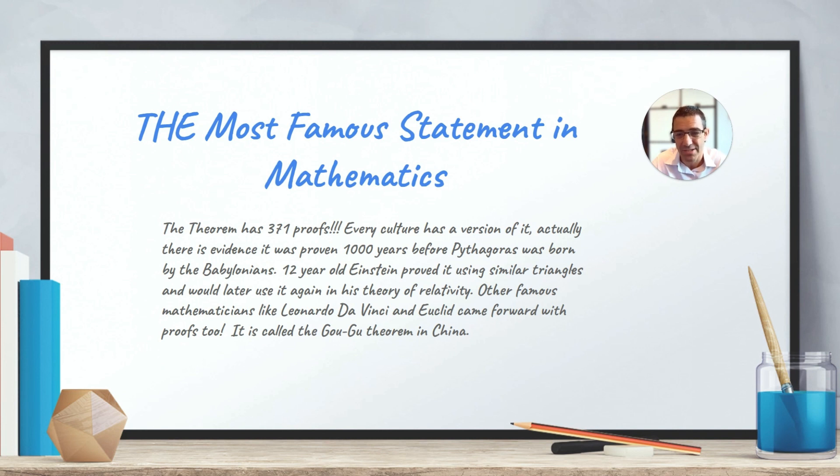And in fact, there's so many proofs to the Pythagorean theorem. It is the most proven theorem in mathematics. It's the most famous statement in mathematics with 371 proofs. Every culture has a version of it. Actually, we believe that probably a thousand years before Mr. Pythagoras was born, it was proven by the Babylonians, or at least they used it. So it might have not been formally proved, but they had a use for it.